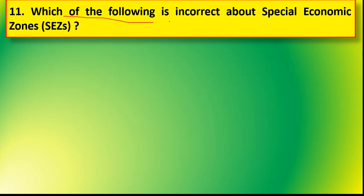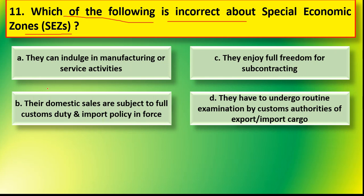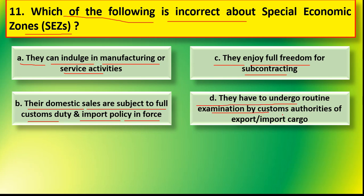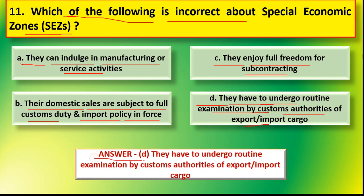Next question: which of the following is incorrect about special economic zone? Options are: option A they can indulge in manufacturing or service activities, option B their domestic sales are subject to full custom duties and import policy in force, option C they enjoy full freedom for subcontracting, option D they have to go under routine examination by customs authority of export and import cargo. The correct answer is option D — option D is incorrect about special economic zone.